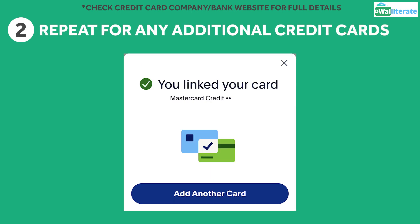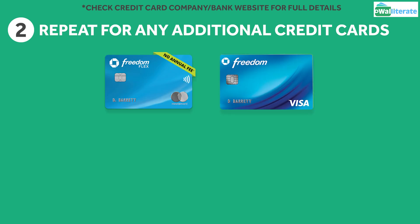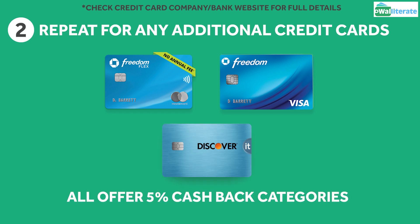Next, you can add any other rotating category cards you have by following the same process. The Chase Freedom Flex card, the original Chase Freedom card which is no longer available, and the Discover It cashback credit card all offer those 5% cashback rotating categories, so you can add all three if you have them.